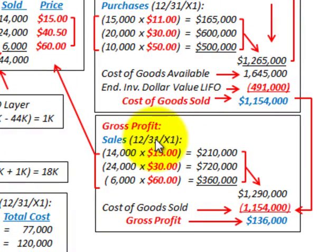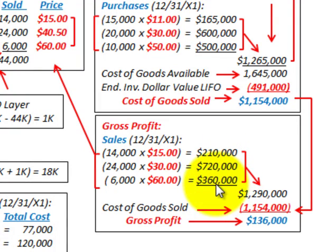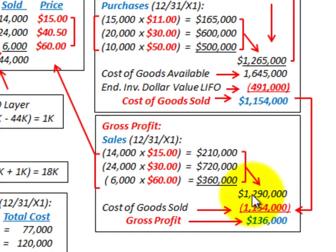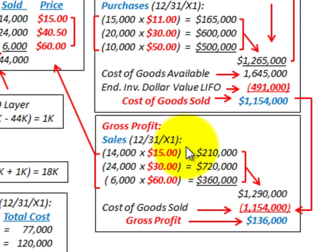For gross profit, we start with our sales for the year — sales quantities times sales price for each unit — totaling revenue of $1,290,000. We then subtract our cost of goods sold of $1,154,000, giving us a gross profit of $136,000. This demonstrates how, using separate inventory pools for items A, B, and C, we calculate gross profit and cost of goods sold using the dollar value LIFO method.